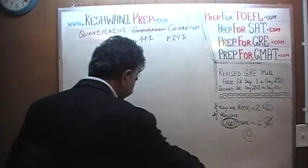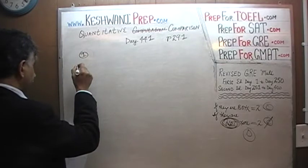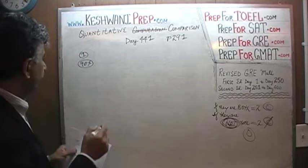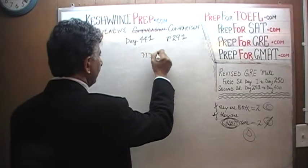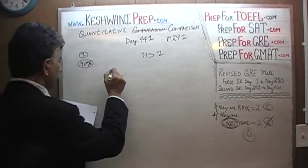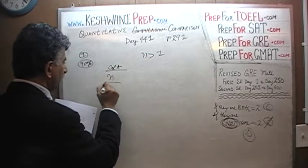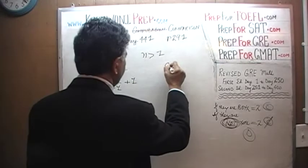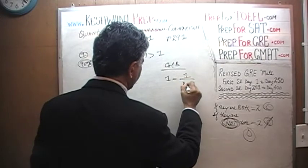Problem number 1. When it was given in the exam, 90% of people had no trouble with it — 90% of people got it right. Here is what we are told: n is more than 1. And here is what we want to compare. Column A: n over (n+1) plus 1, versus Column B: 1 minus 1 over (n+1).